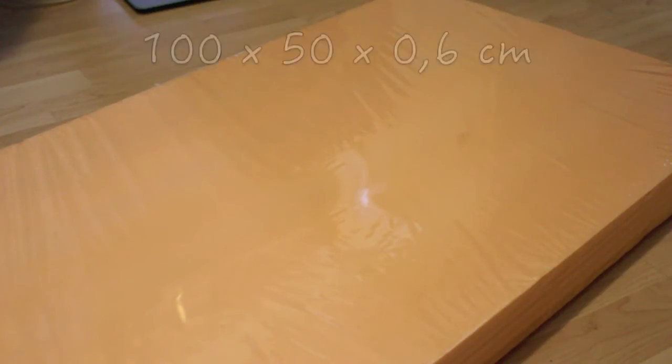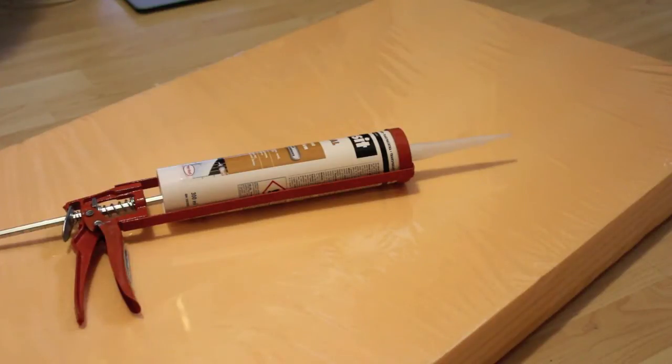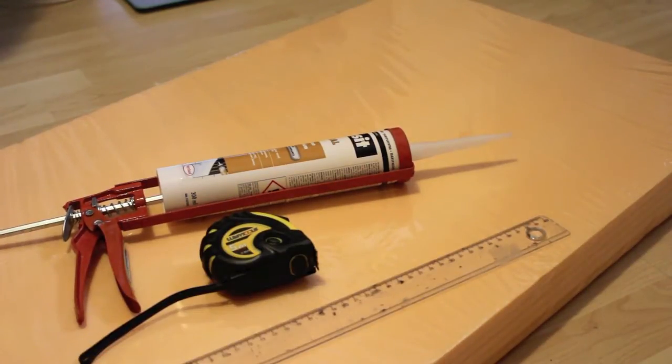Here are the things you're going to need: foam board, silicone for mirrors or heavy stuff, ruler or measuring tape, pencil and eraser, exacto knife, and cardboard.